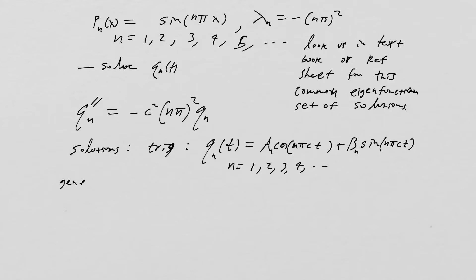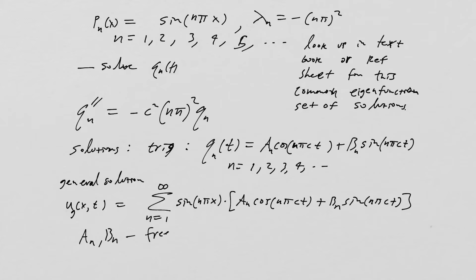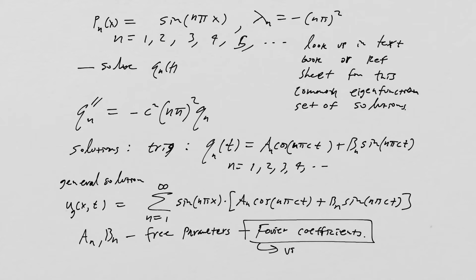Now we put together our general solution. U(X, T) equals the sum from N equals 1 to infinity of sin(N pi X) times [A_N cos(N pi C T) plus B_N sin(N pi C T)]. The A_N and B_N are the free parameters, and they are also the Fourier coefficients. We'll determine those Fourier coefficients via the initial conditions.